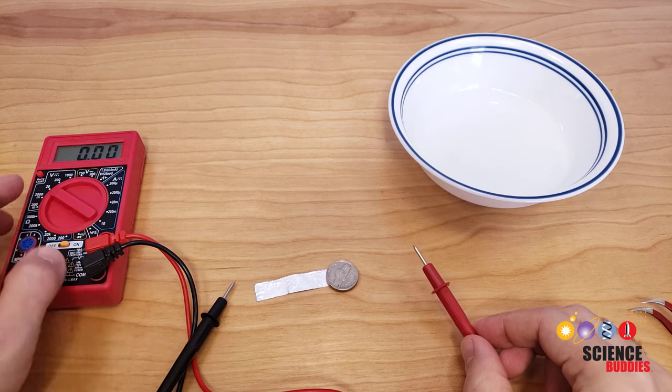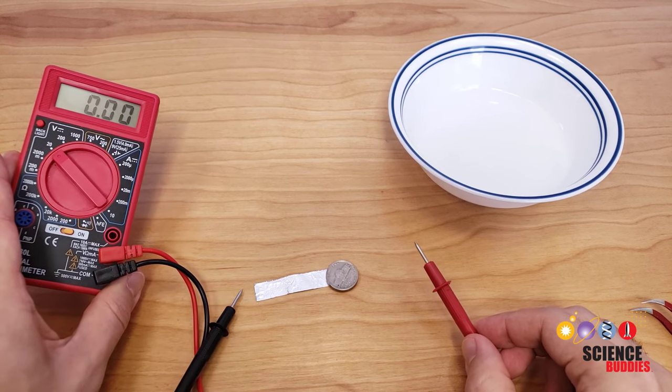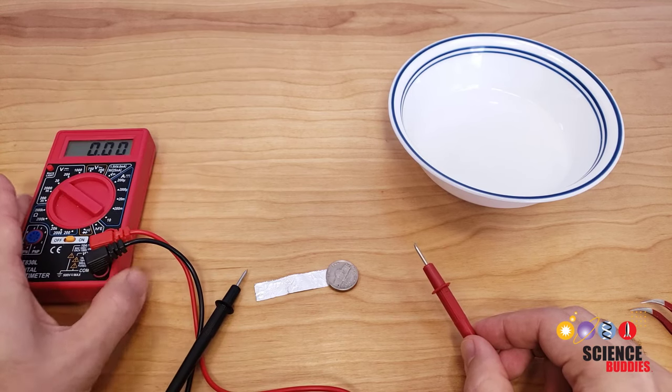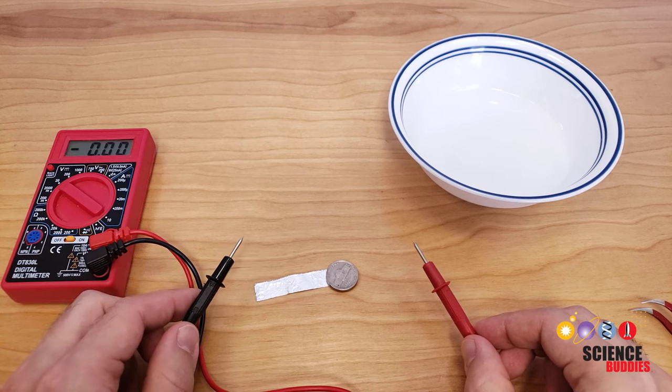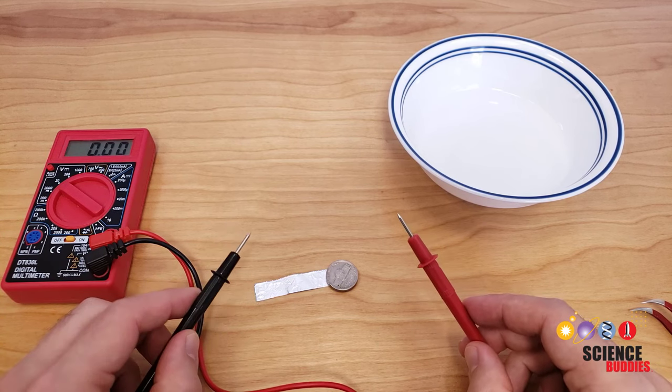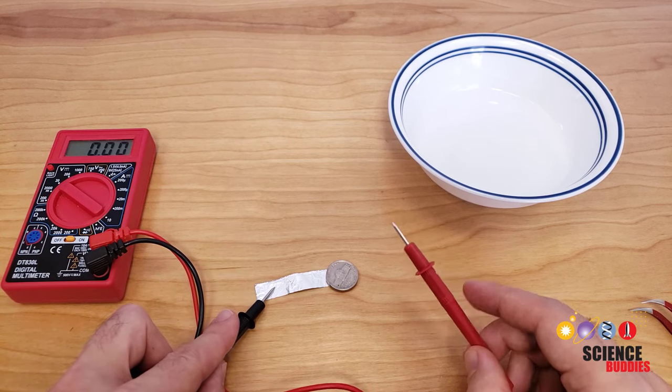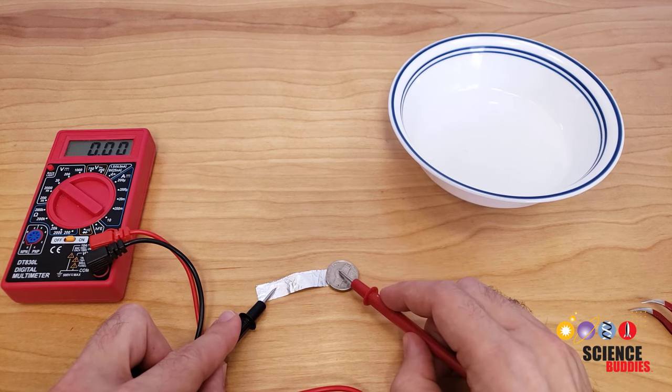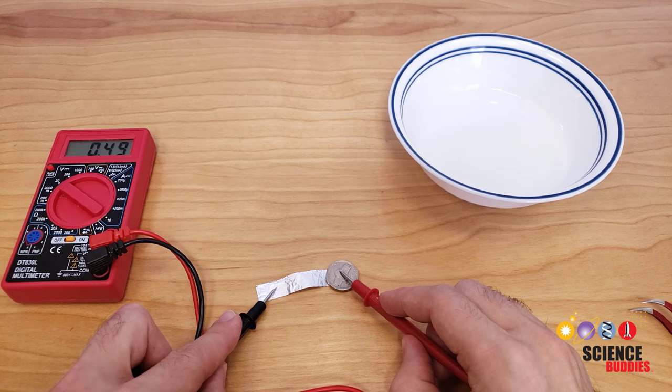Now, set your multimeter to measure DC voltage. Again, if you don't know what that means, check out the link to our multimeter tutorial in the description of this video. Take your multimeter probes, touch the black probe to the strip of aluminum foil and the red probe to the top of the nickel. You should be able to measure the voltage produced by the battery.